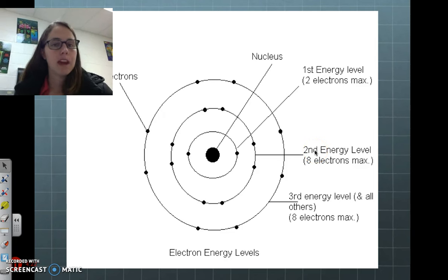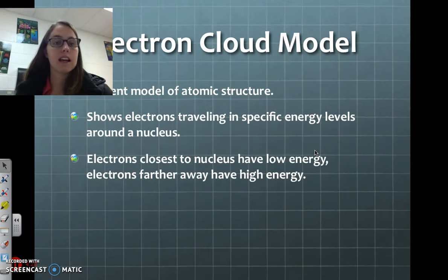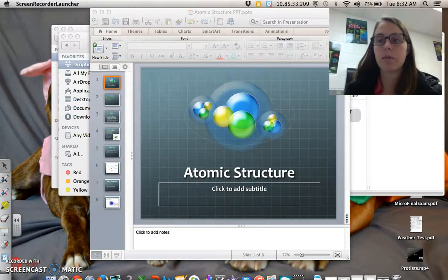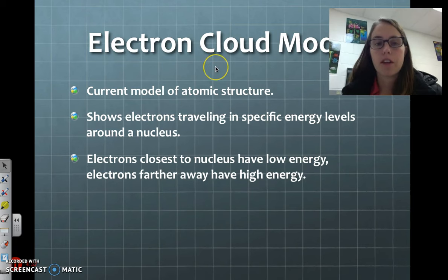We can determine an element's identity by looking at its protons, which we'll talk about next time or on the next video. But the current accepted model is called the electron cloud model.